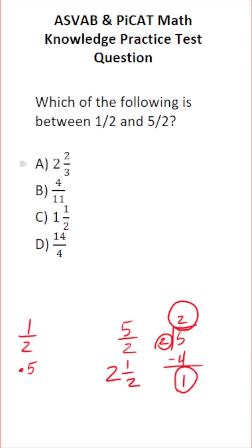So we're trying to find the fraction that is in between 1½ or 1.5, and 5 over 2 or 2½. Right away, you should know that 2⅔ is the same thing as 2.66. 2½ is the same thing as 2.5. So this one is too big.